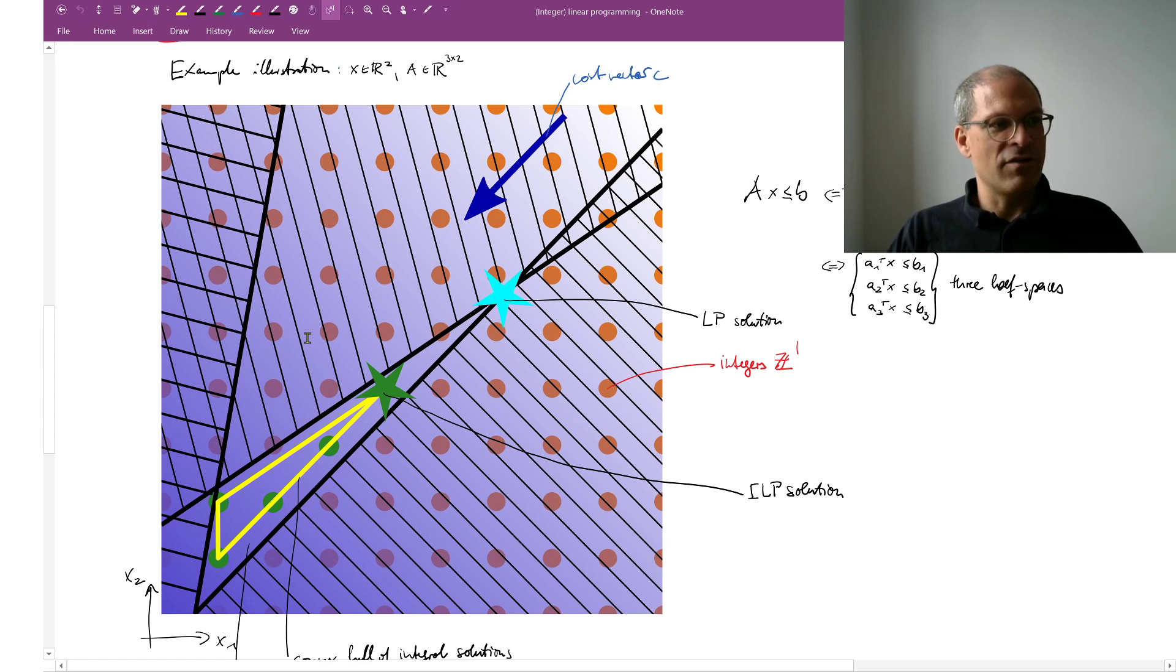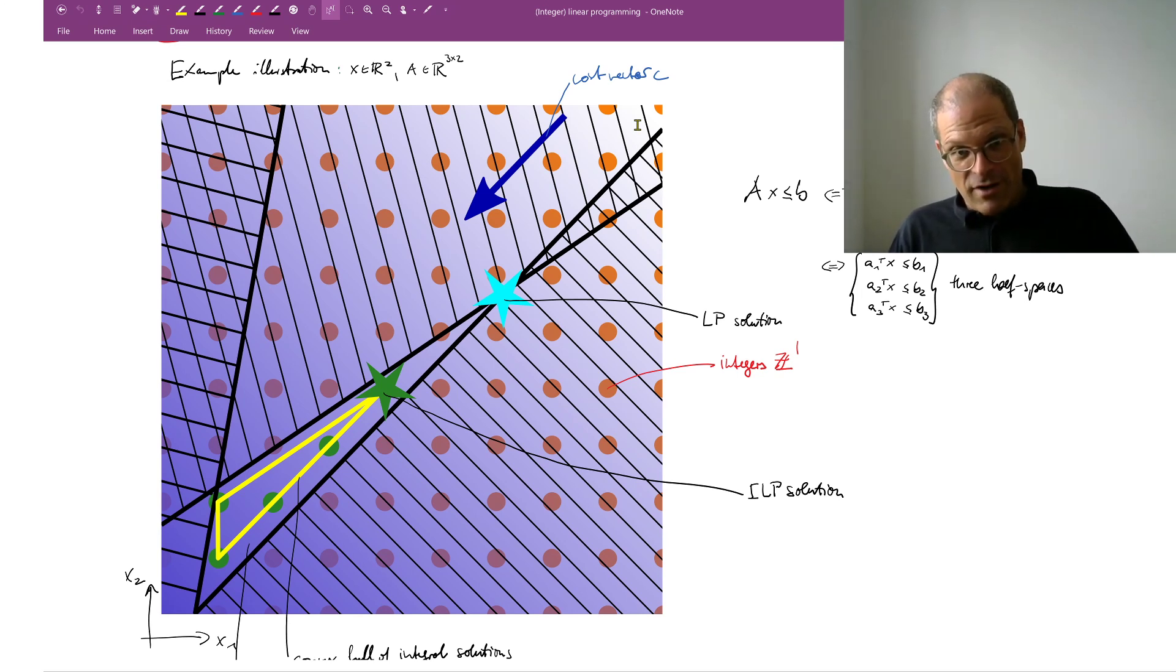In the background of this image you see this shading from dark blue meaning high cost to light blue or white meaning low cost. If there were no constraints, we would walk infinitely far in the direction of the top right corner and be ever happy. But we have these constraints, so we're looking for the best solution subject to those constraints. Let's try and visualize those.